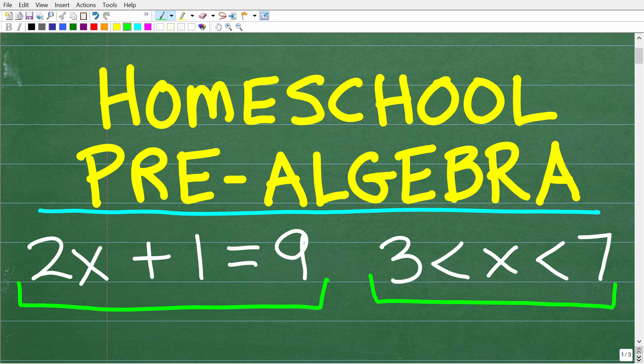Okay, so here we have an equation 2x plus 1 is equal to 9. And here we have a compound inequality. So we have x is greater than 3 and at the same time less than 7. So let's take a look at the difference between an equation and an inequality right now.